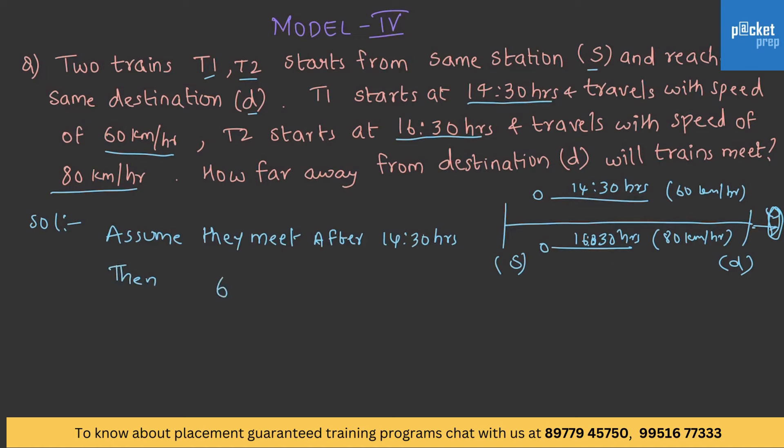x minus 2 is nothing but the relative time difference. That implies we get x value as 8. And so, therefore, required distance: